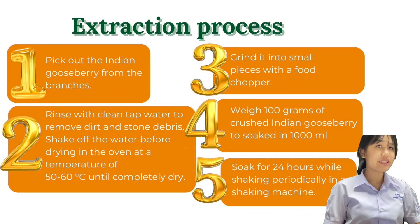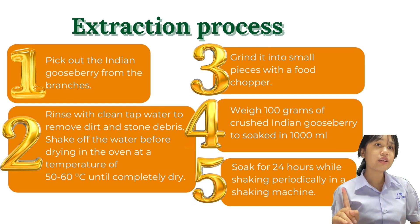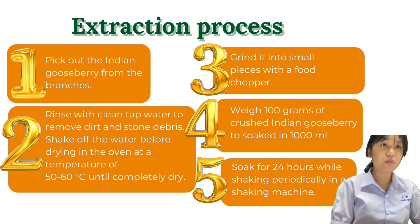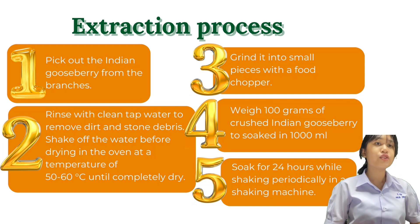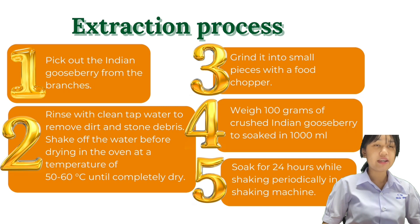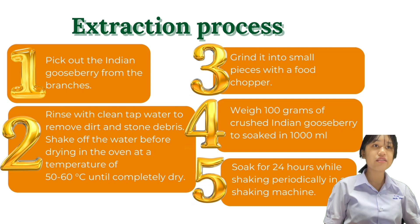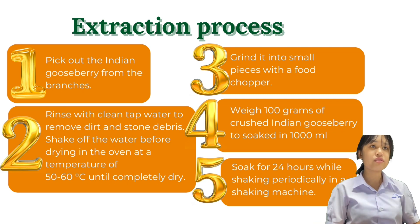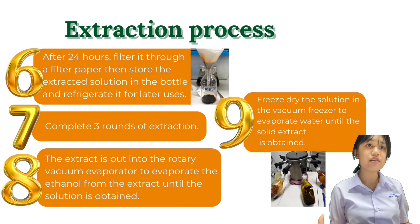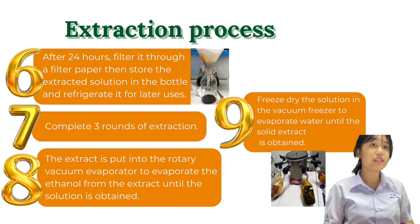To make the effervescent mouthwash tablet, we extracted the Indian gooseberry and Thai basil extracts. Pick out the Indian gooseberry from the branches. Rinse with clean water to remove dirt. Shake off the water before drying in the oven at 50 to 60 degrees Celsius. Grind into small pieces with a food chopper. Weigh 100 grams of crushed Indian gooseberry and soak in 1,000 ml. Soak for 24 hours while shaking periodically in a shaking machine. After 24 hours, filter it through filter paper. Store the extracted solution in a bottle and refrigerate for later use.